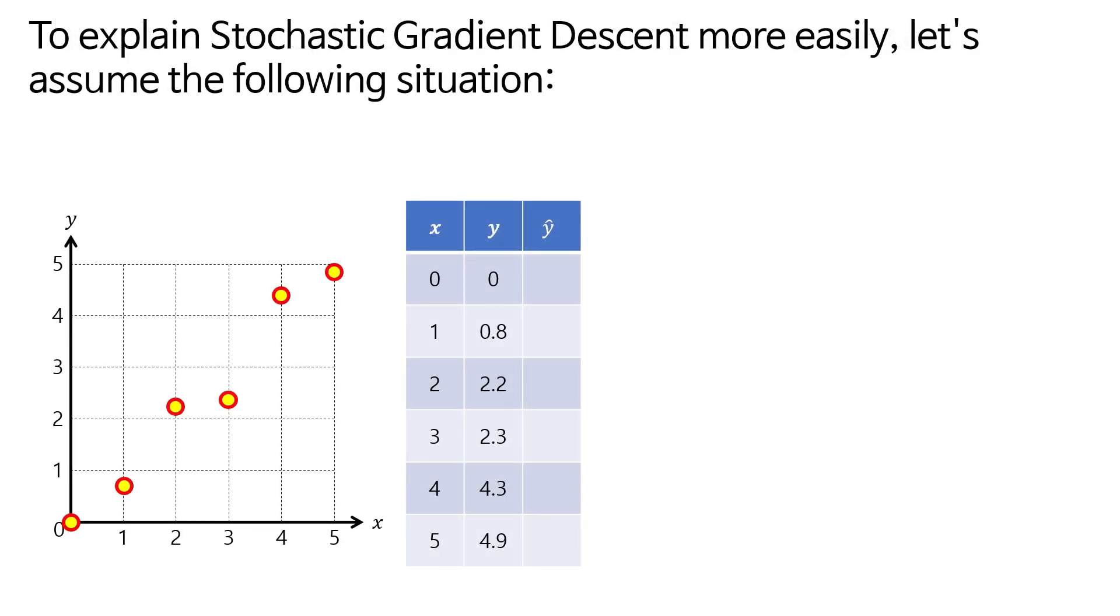This is the concept behind stochastic gradient descent. To explain stochastic gradient descent more easily, let's assume the following situation.